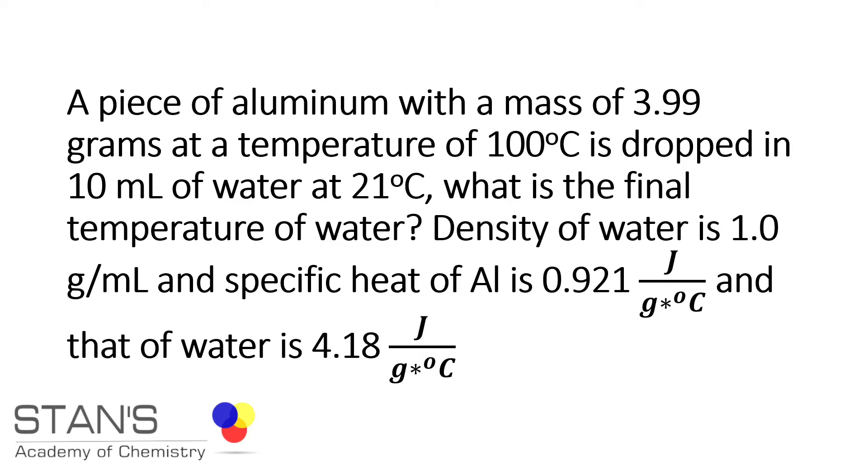10 milliliters of water at 21 degrees Celsius. What is the final temperature of water? Density of water is given as 1.0 grams per milliliter and specific heat of aluminum is 0.921 joules per gram per degree Celsius and that of water is 4.18 joules per gram per degree Celsius.